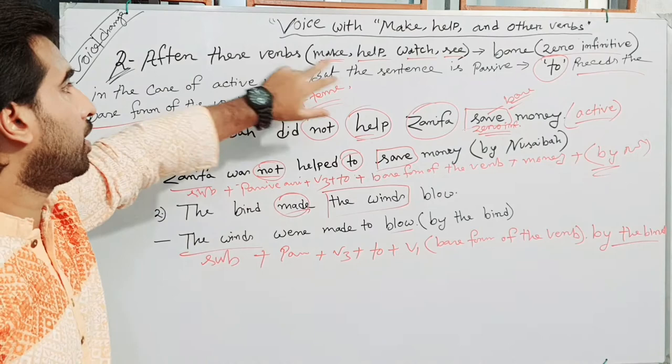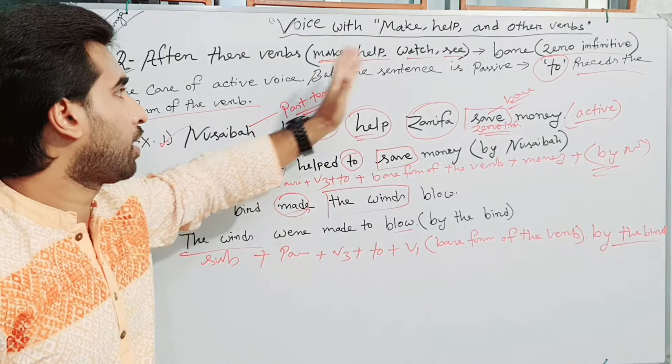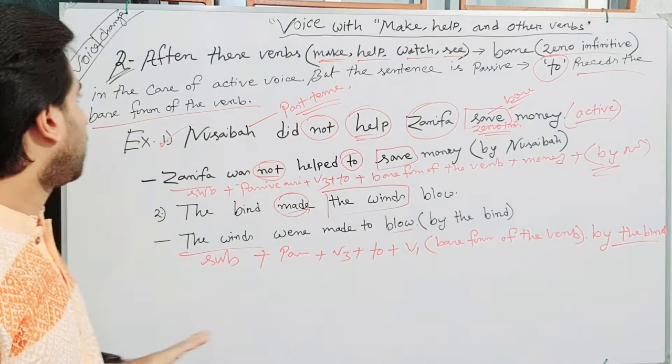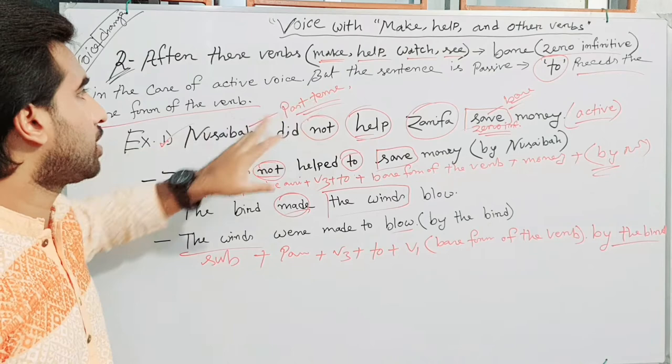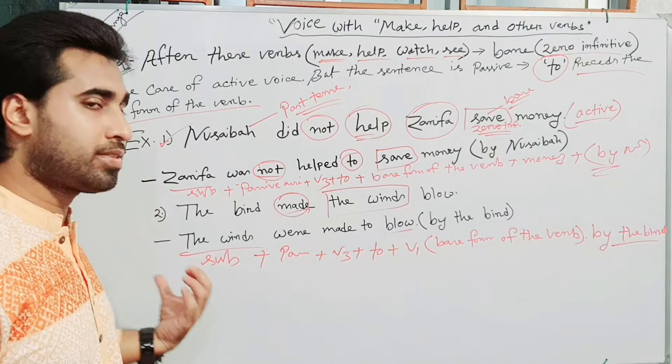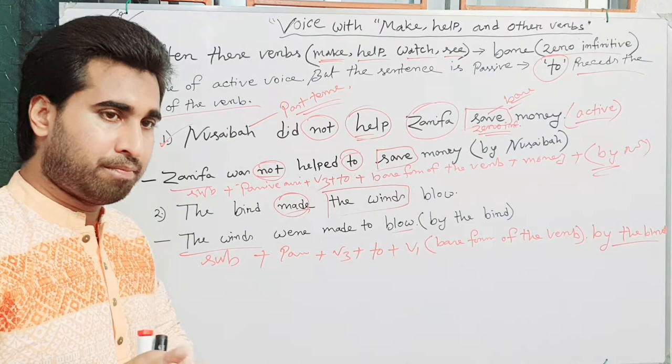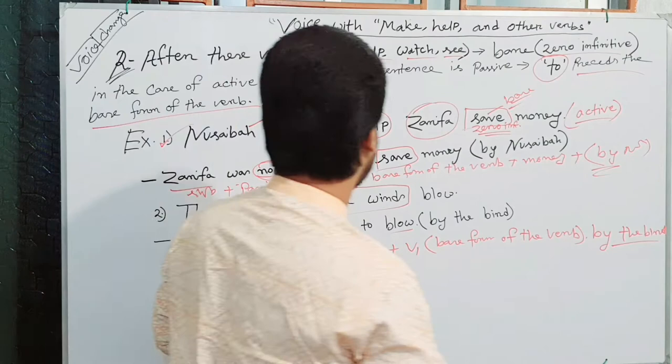So, dear followers, if you see in a sentence: make, help, watch, and see — in a sentence with these verbs — then as an active voice, after this verb, the main verb must be in zero-infinitive. And in the case of passive form, 'to' precedes the main verb, or base form of the verb, or zero-infinitive.